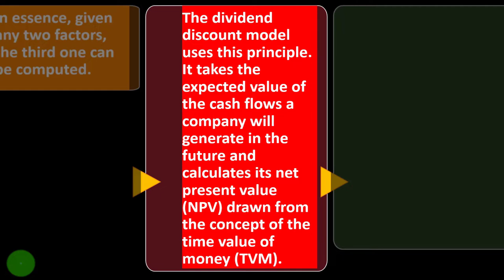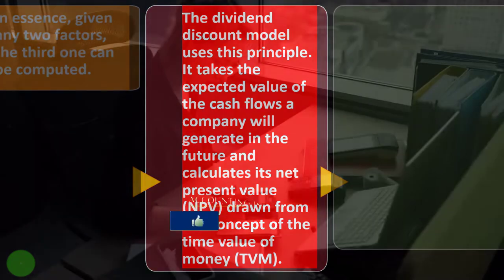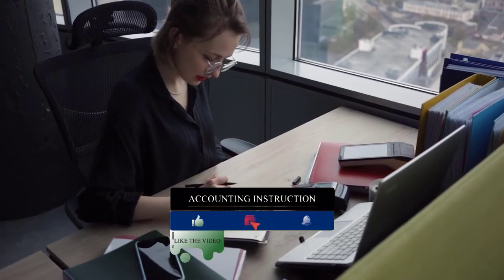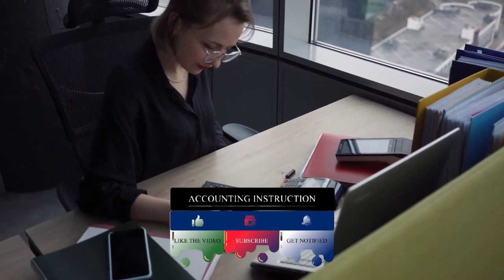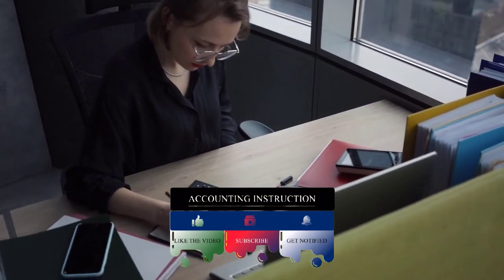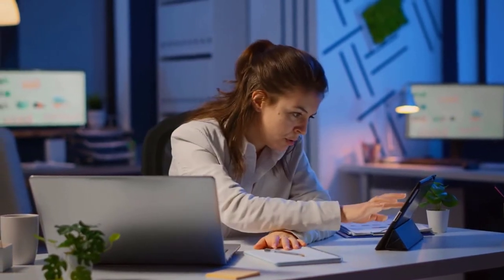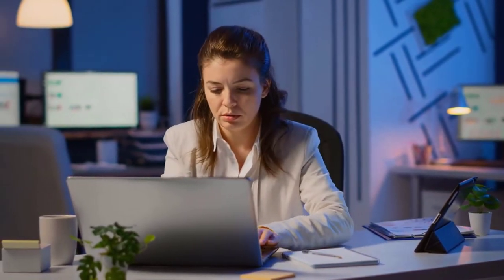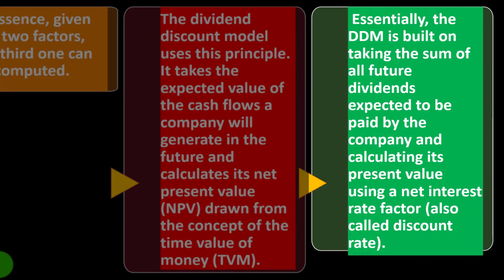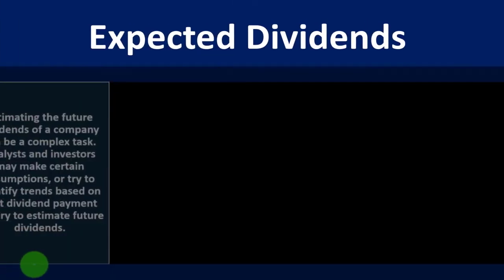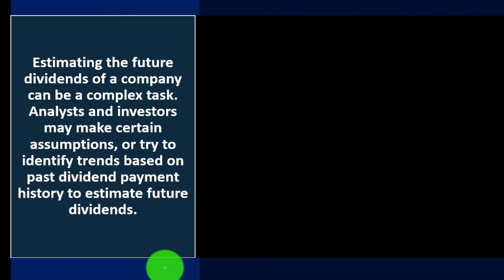Given any two factors, the third can be computed. The DDM uses this principle — it takes the expected value of the cash flows a company will generate in the future and calculates its net present value using the concept of time value of money. We lay out all the future cash flows we expect from the investment, which go on potentially forever, and discount them back. Essentially, the DDM is built on taking the sum of all future dividends and calculating their present value using a net discount rate.